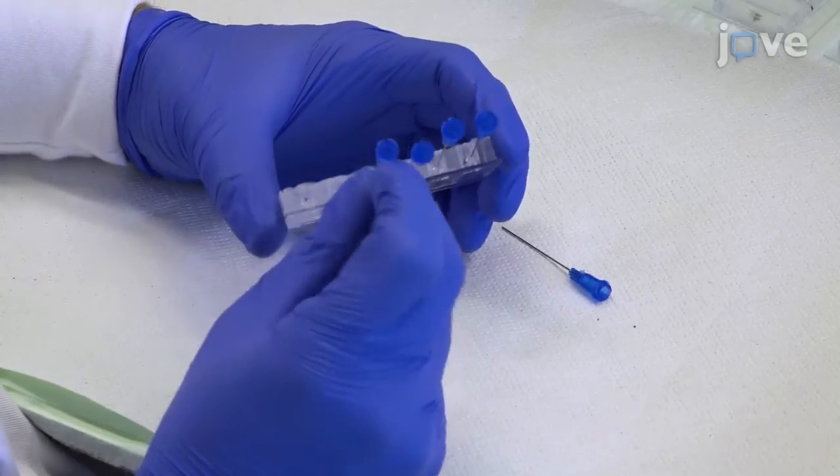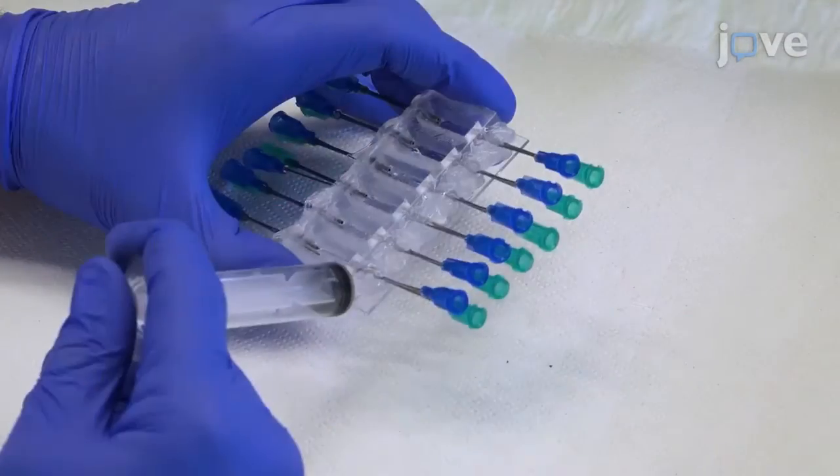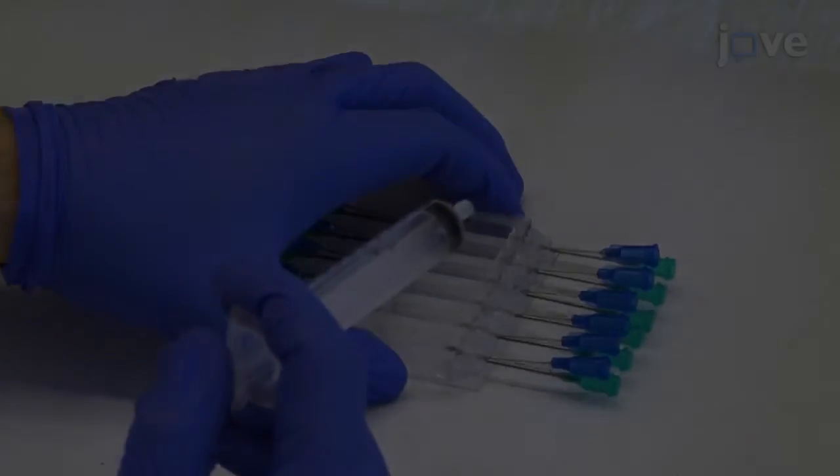Insert 12 22-gauge needles for the lumen and 12 18-gauge needles for the well. Fix all the needles in place using silicone and let it set.